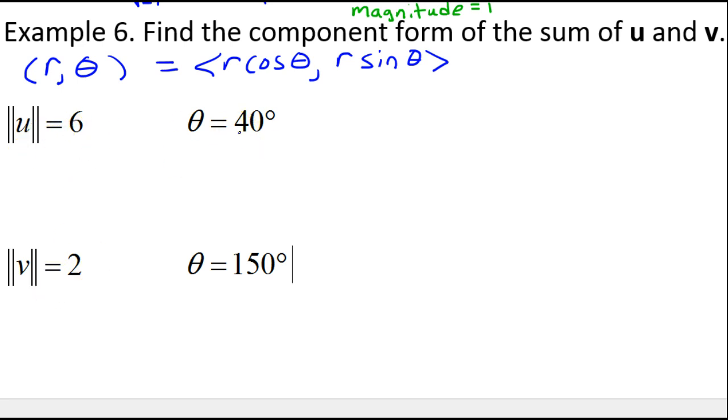So let's convert both of these vectors from magnitude-direction form to component form using this formula. For vector u we're going to do 6 cos 40° for the horizontal component and 6 sin 40° for the vertical component. For vector v that would be 2 cos 150° for the horizontal component and 2 sin 150° for the vertical component.